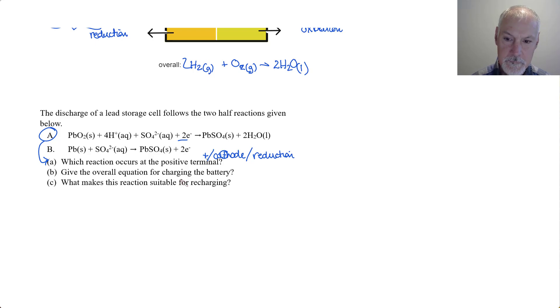Give a suitable equation for charging the battery. These equations show the discharging of a battery. So I need to reverse them. And let's look at what they look like when they're reversed. So there's equation number one reversed. And there's equation number two reversed. Let's see if we can cancel out anything common to both sides. We have two electrons and two electrons.